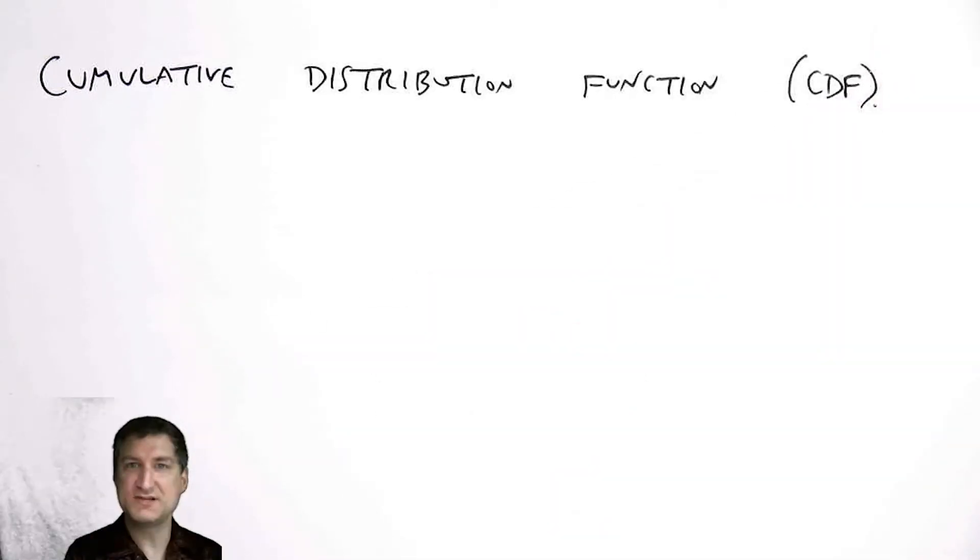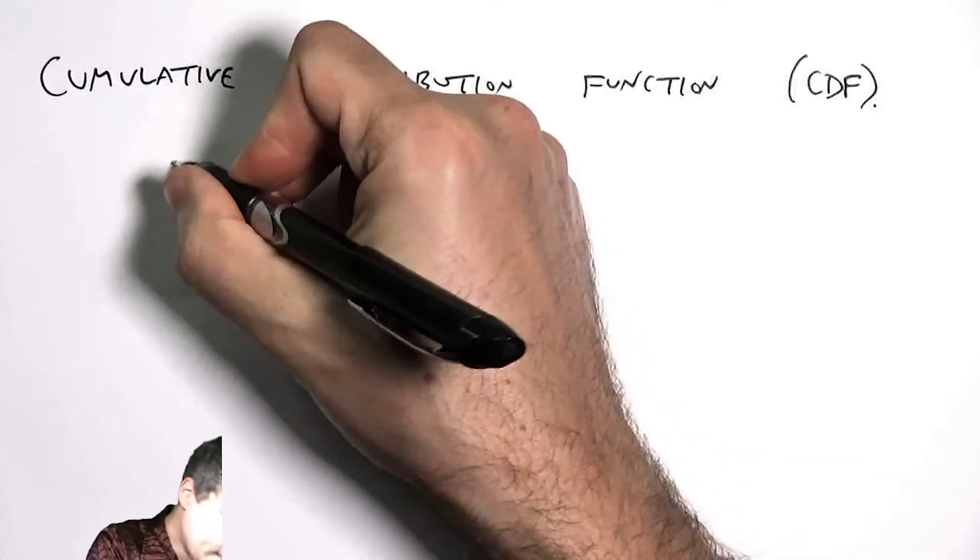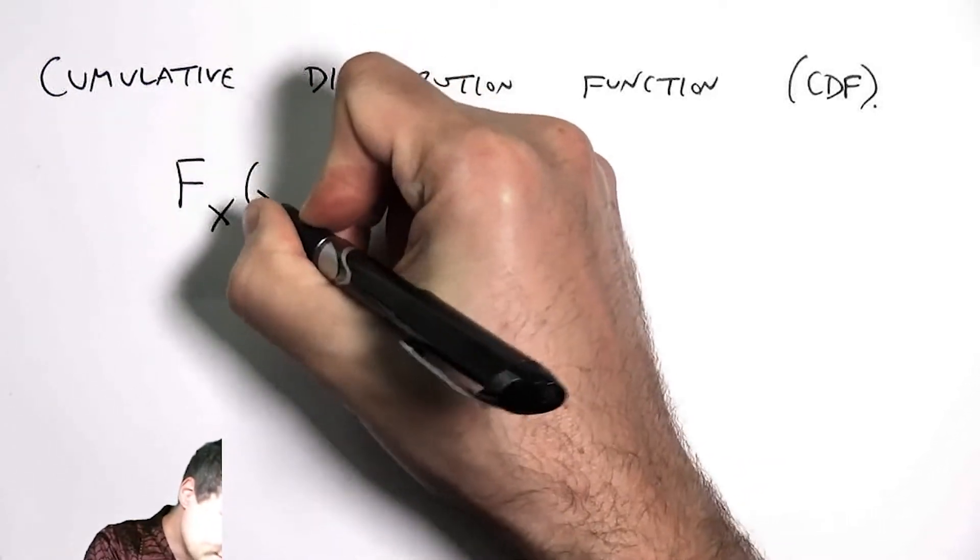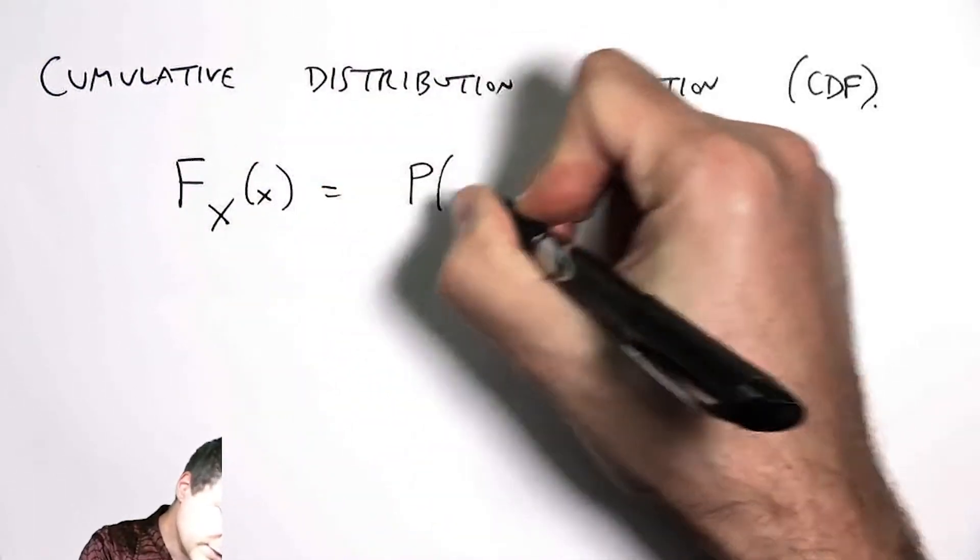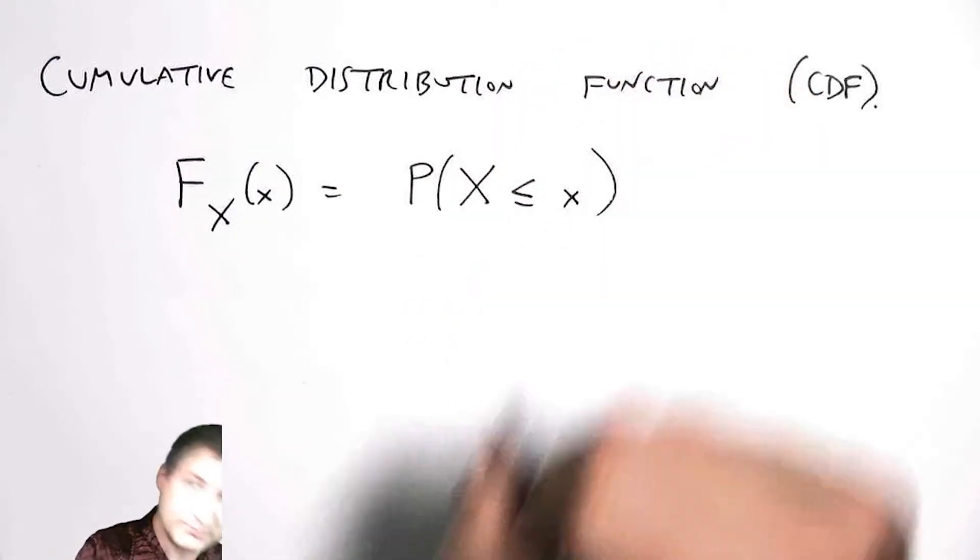So the CDF is very simply defined as the probability that a random variable is less than a certain value, and we denote it like this: it's the probability that the random variable X is less than or equal to some value.